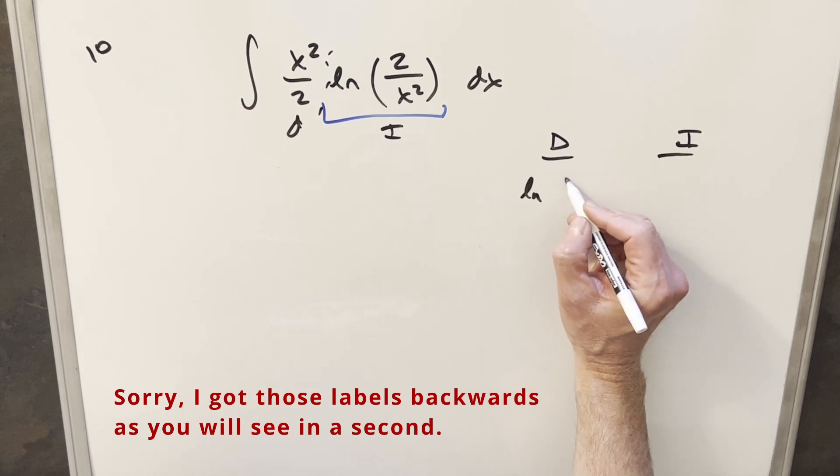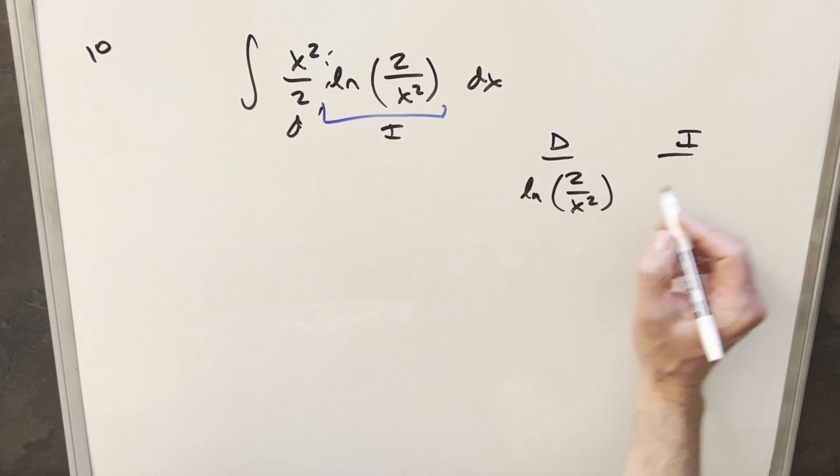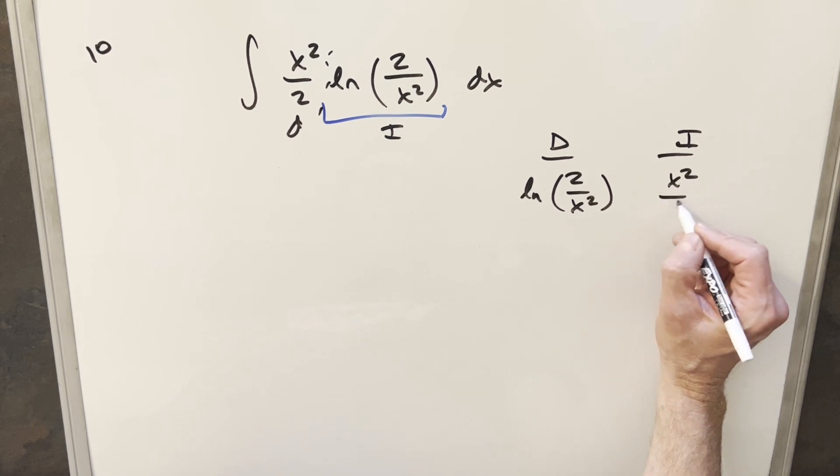So we're going to get the derivative of natural log 2 over x squared and we'll just integrate this other part, x squared over 2.